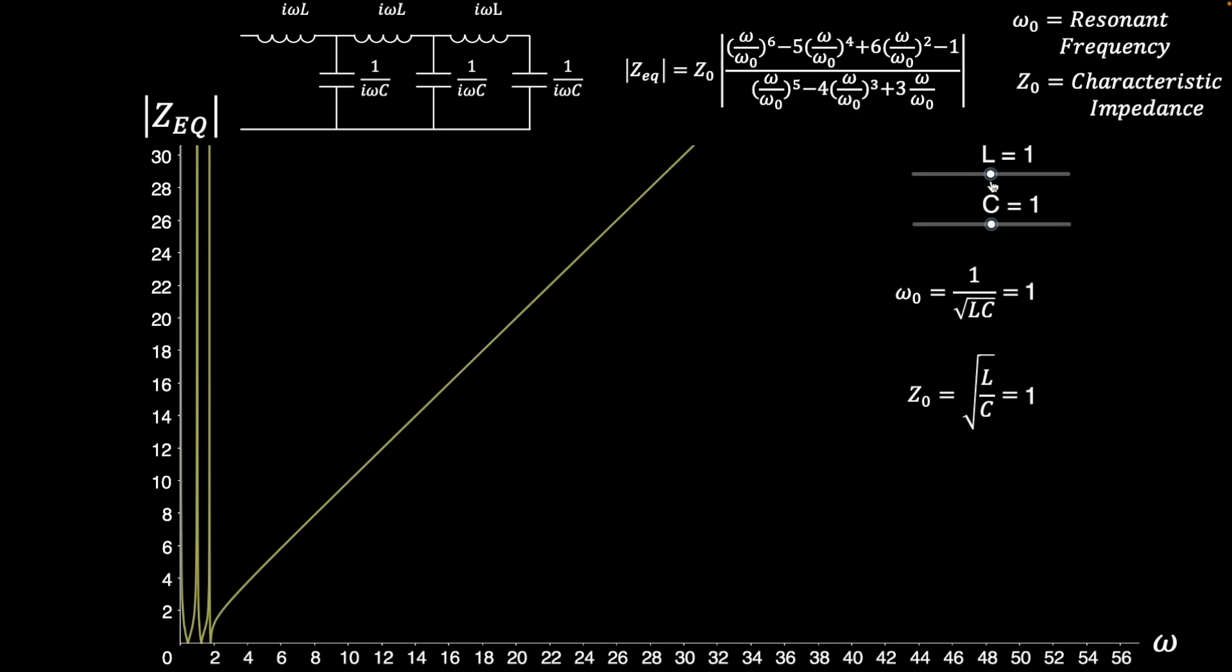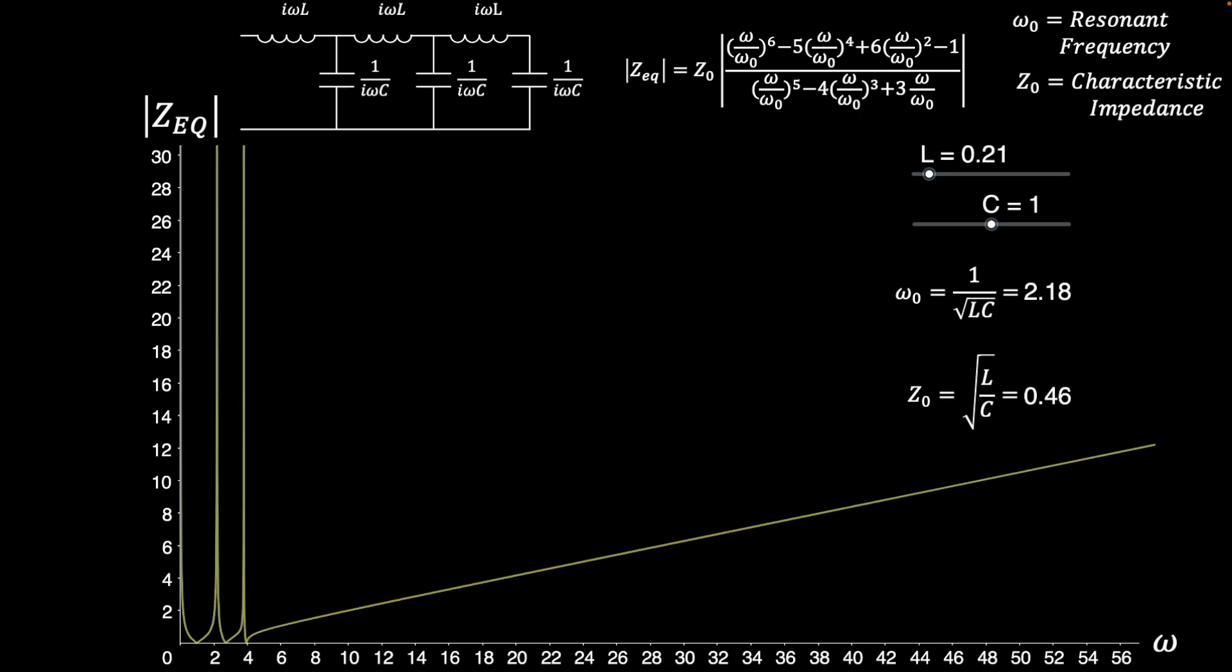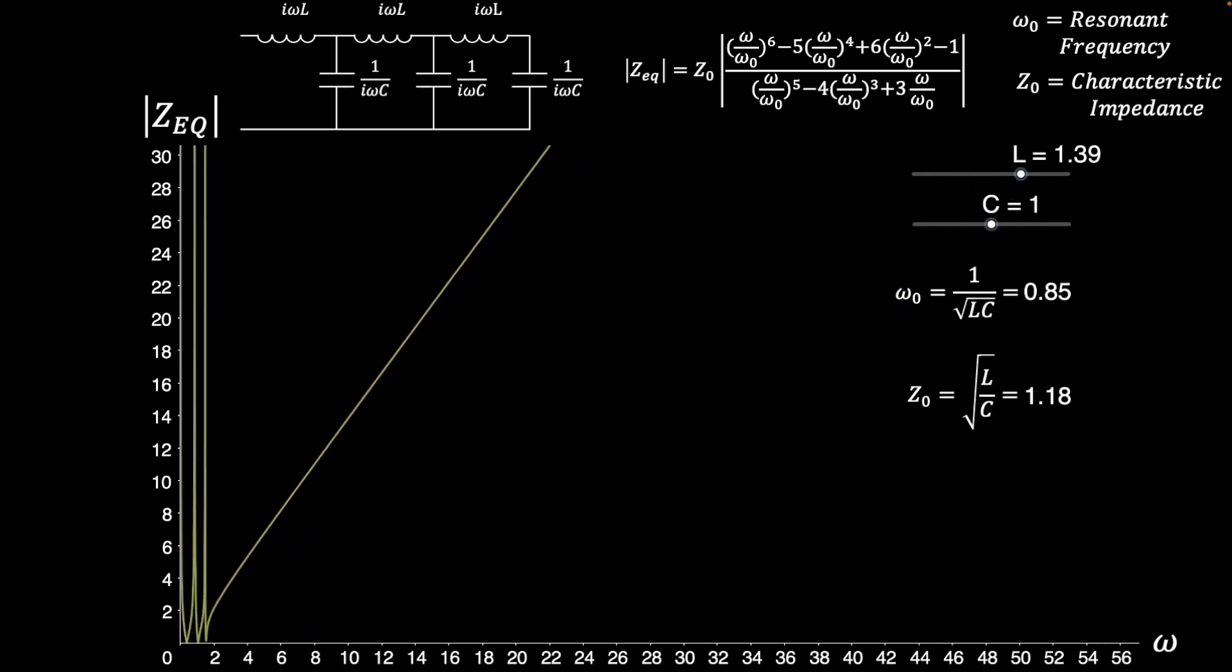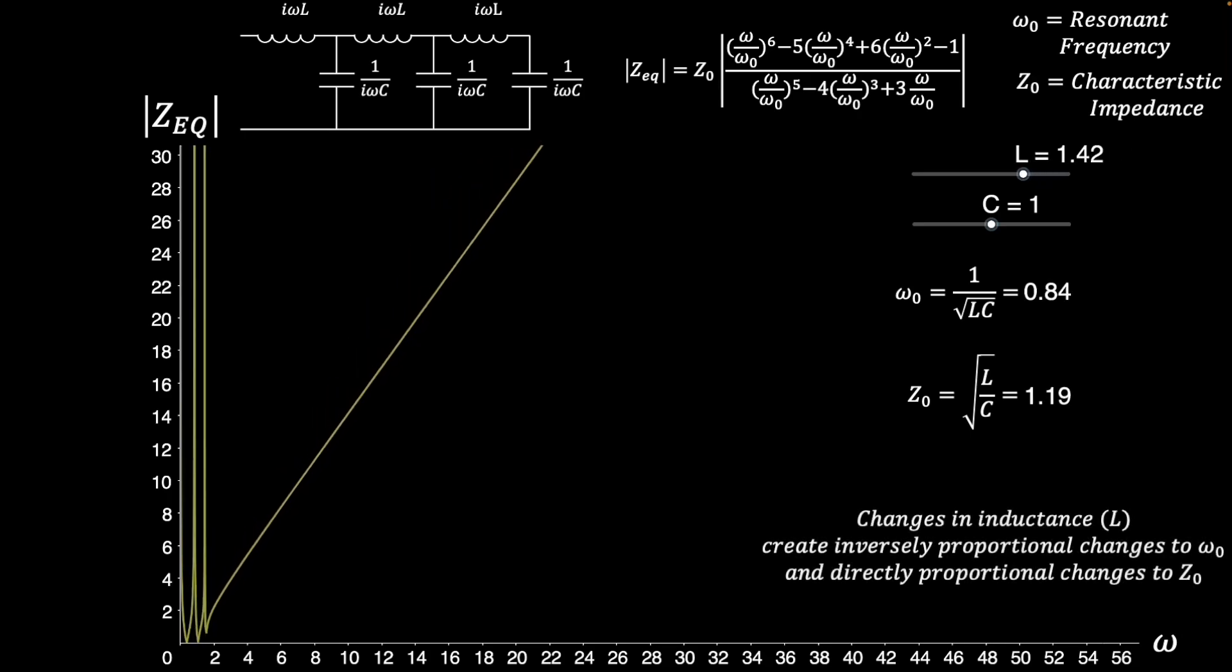Now, I'll decrease and increase just the inductance, L, to see its effects on the impedance curve. Just like capacitance, changes in inductance create inversely proportional changes to the resonant frequency, but opposite to capacitance, changing inductance up or down changes the characteristic impedance in the same direction.